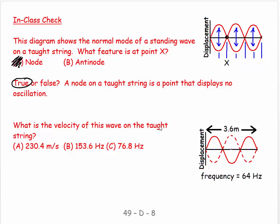And then what is the velocity of the wave on a taut string? So I've given you here the length of the string. And I've shown you a pattern. And I've given you a frequency. So if we remember, our first harmonic looks like that.